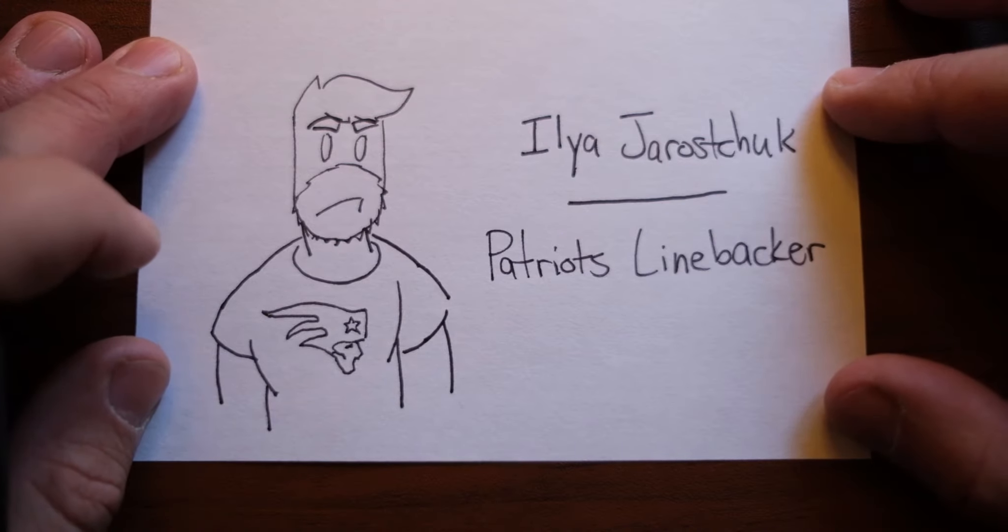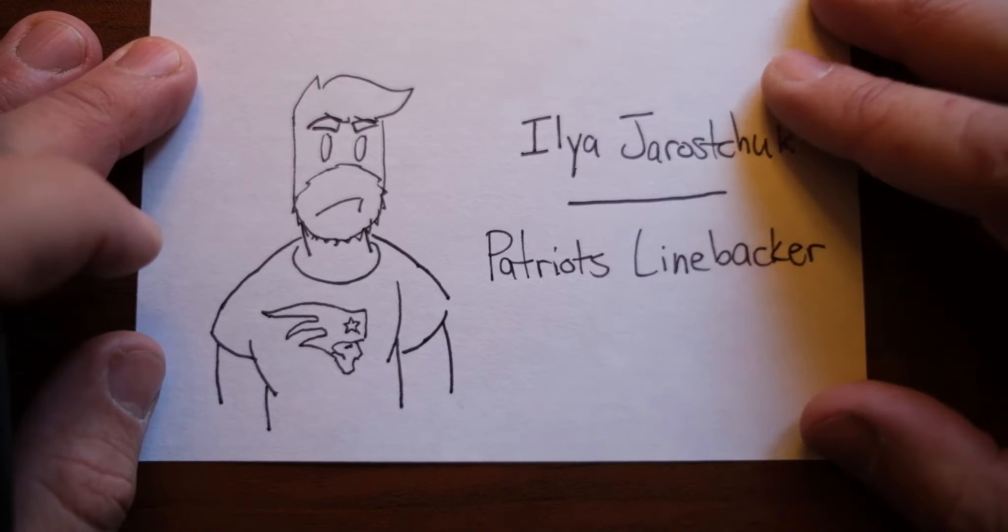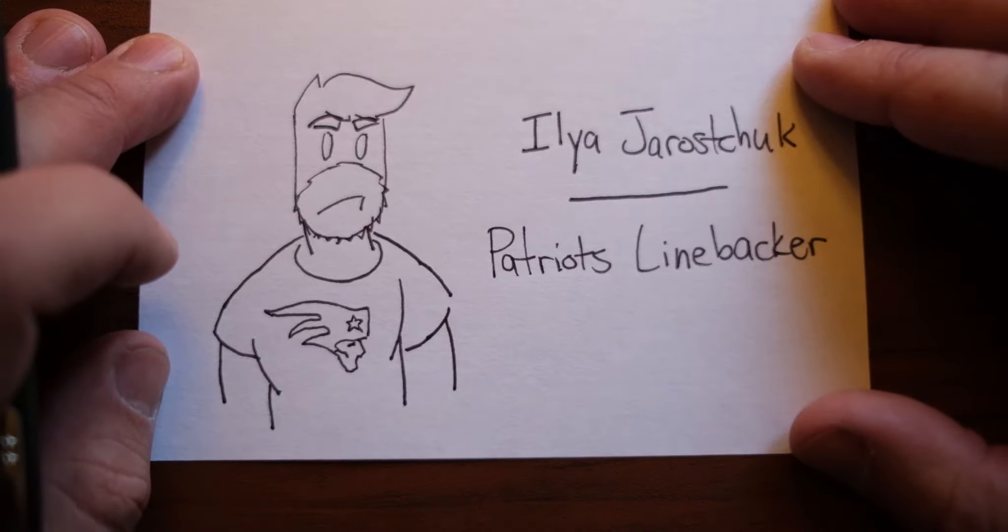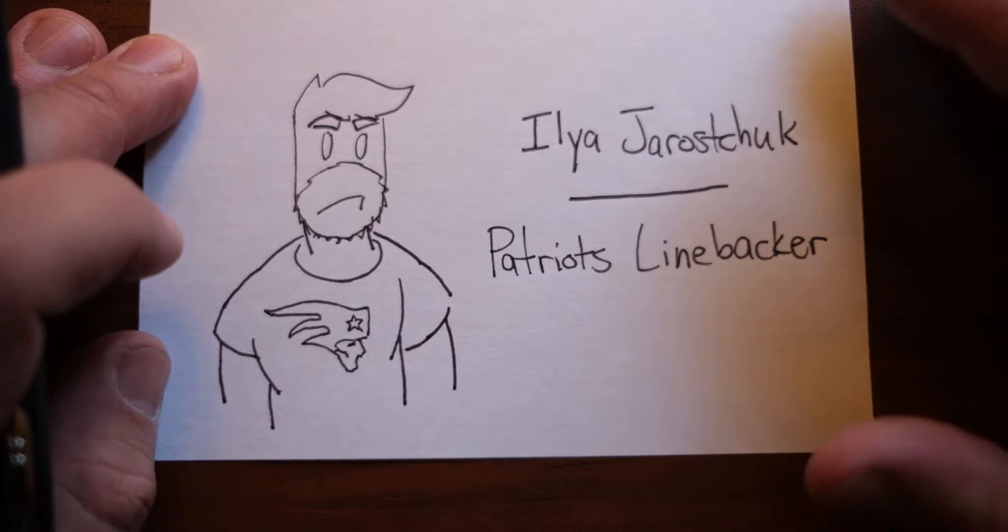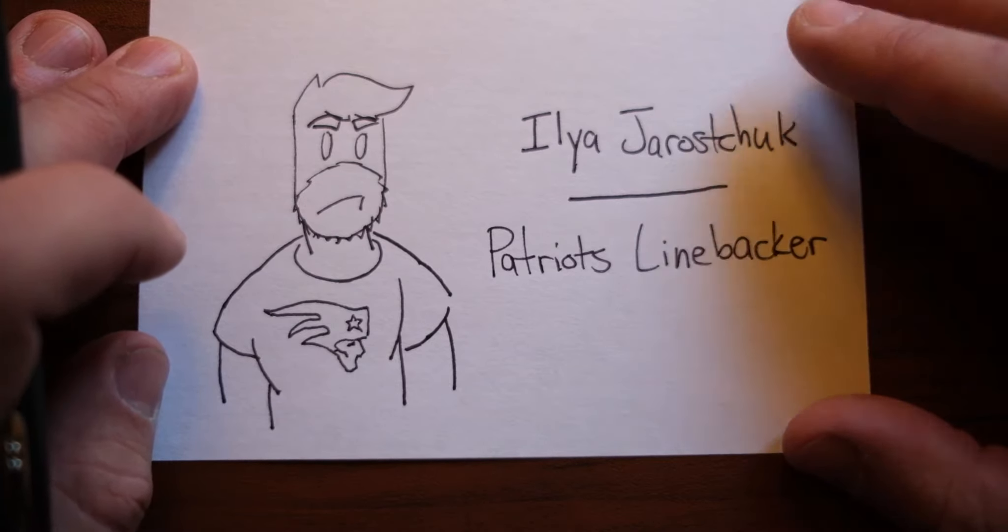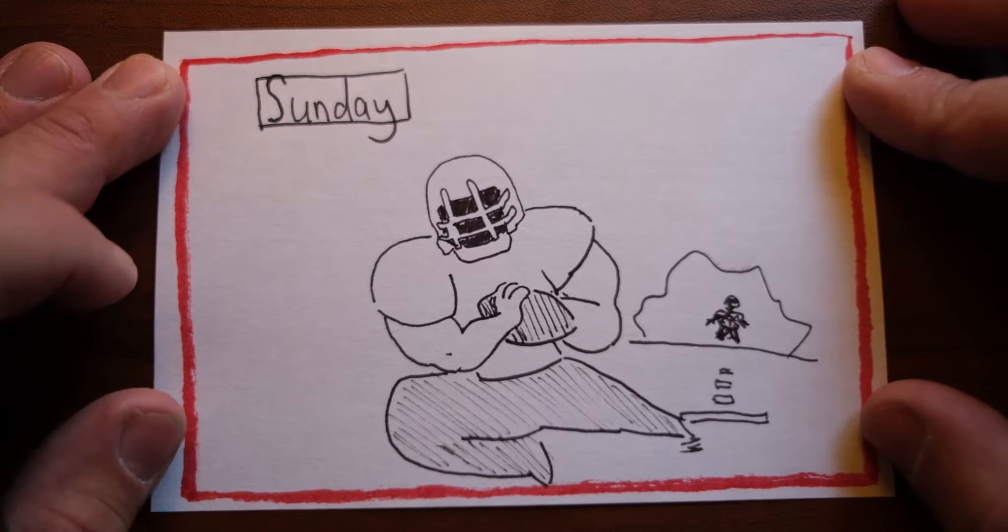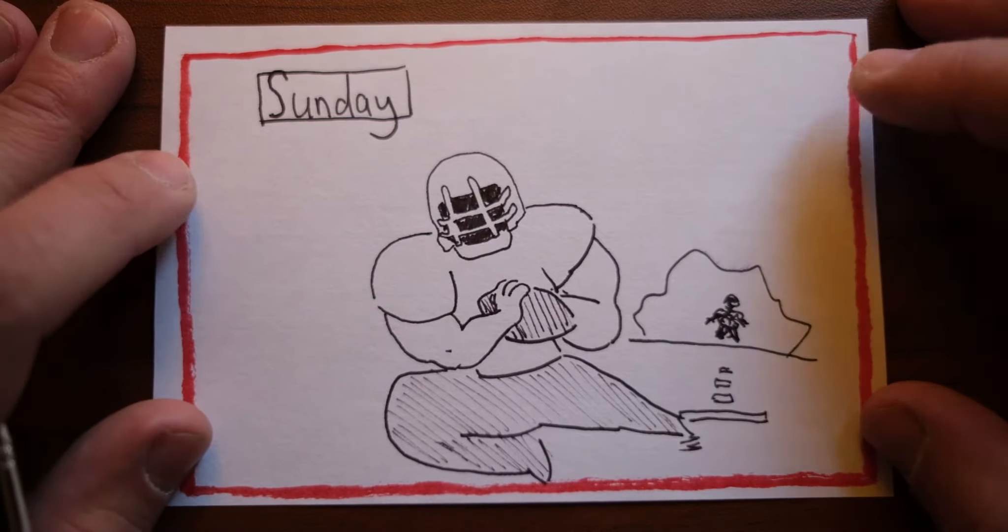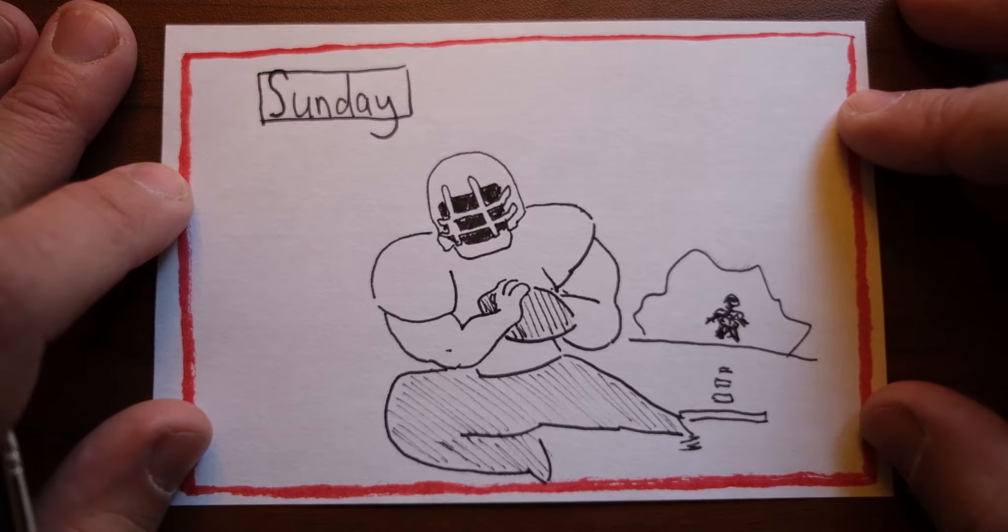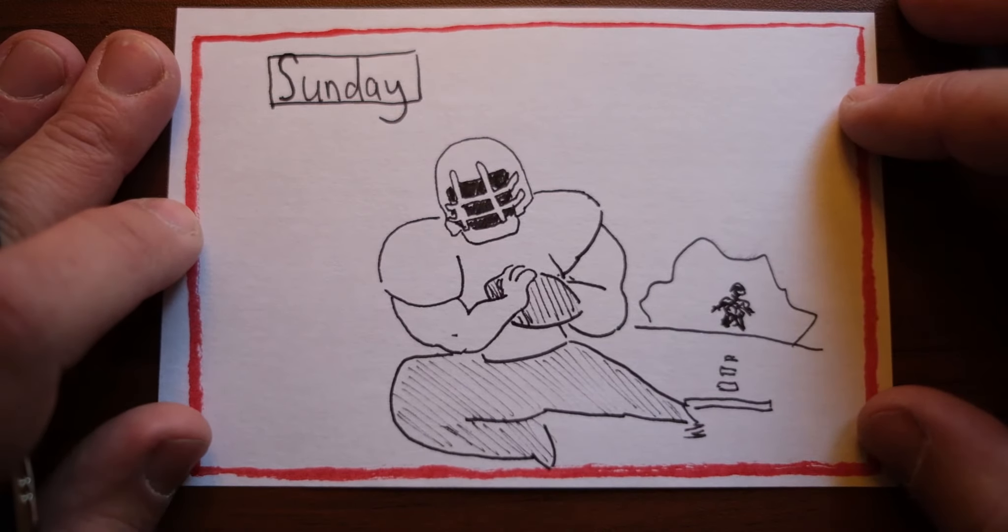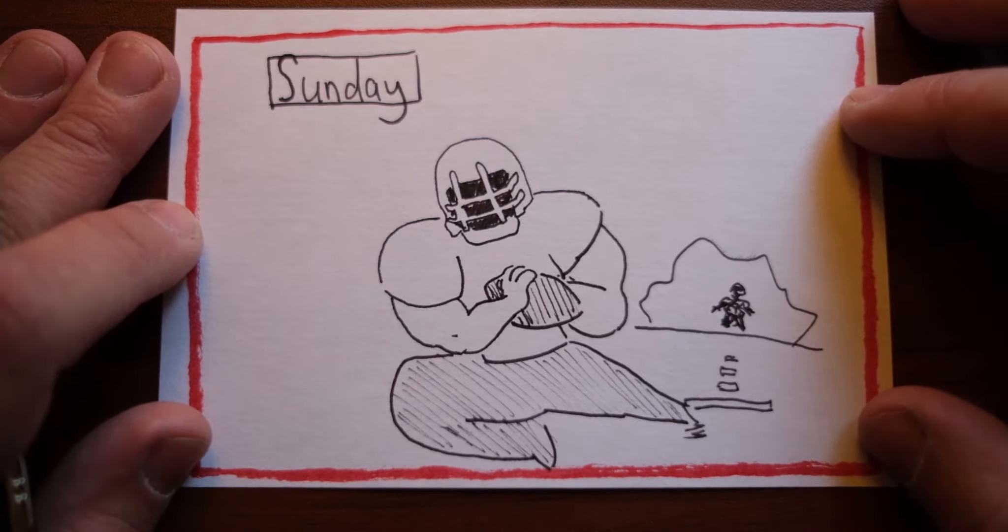Now here's a really great example from the NFL where they have really codified each of these spaces. We spoke to an ex-Patriots linebacker, Ilya Yerashuk. He took us through a week in the life of a professional athlete in the NFL. Starting off on Sunday, game day. This is 100% front stage. The Patriots are performing for their fans, literally doing their job. A pro athlete is usually on the field for about 30 really intense minutes.